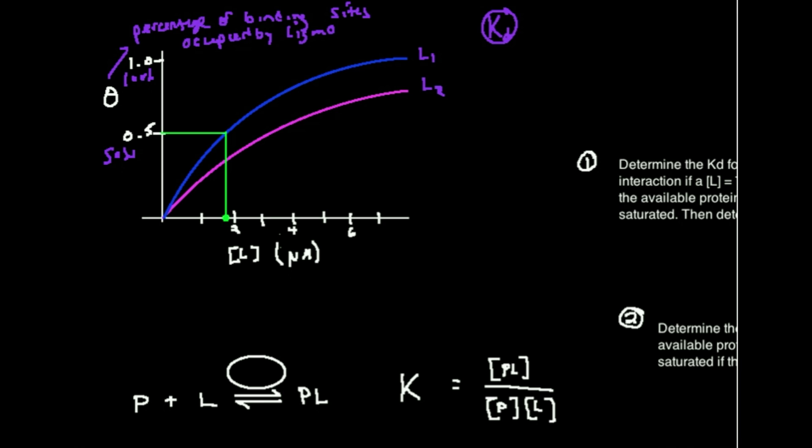So the KD for this first one, KD1, is about 1.75 and whatever the units of this concentration are, you use those. So this is micromolar. So KD1 is 1.75 micromolar.